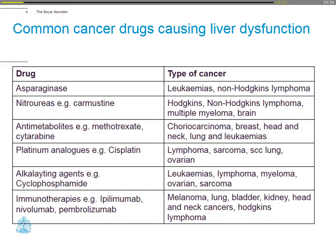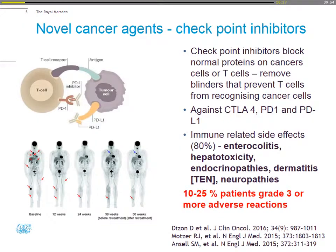We're seeing lots of side effects of immunotherapies, and one of these is hepatotoxicity. These immunotherapies cause immune-related side effects in 80% of patients, with hepatitis, enterocolitis, endocrinopathies, dermatitis, and neuropathies. About a quarter of patients get severe reactions, and so they're often admitted to the ITU and we're having to manage them.